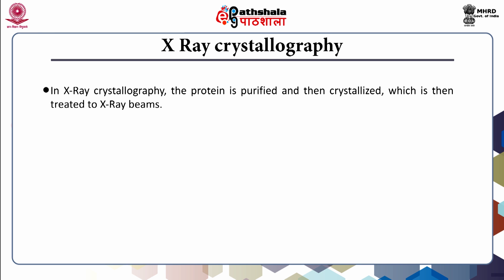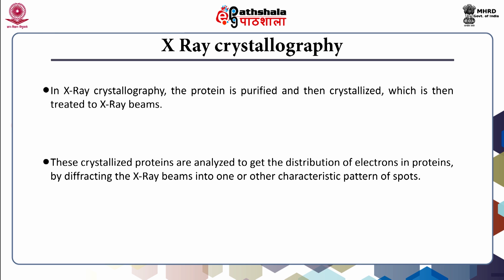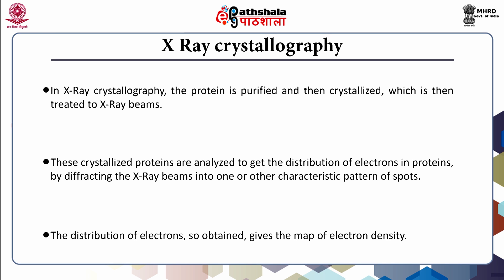In X-ray crystallography, the protein is purified and then crystallized. It is then treated with X-ray beams. These crystallized proteins are analyzed to get the distribution of electrons in proteins by diffracting the X-ray beams into one or another characteristic pattern of spots. The distribution of electrons so obtained gives a map of electron density, which can then be interpreted to determine the location of each and every atom.